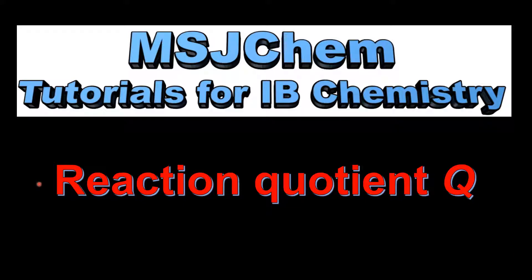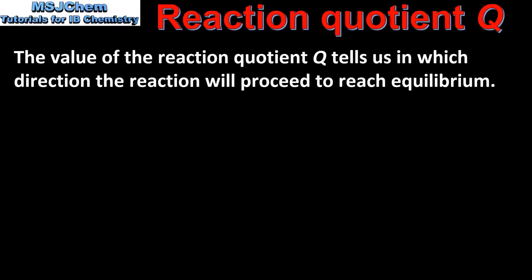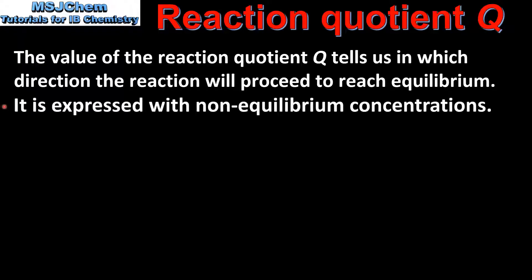This is MSJChem. In this video I will be looking at the reaction quotient Q. The value of the reaction quotient Q tells us in which direction the reaction will proceed to reach equilibrium. It is expressed with non-equilibrium concentrations.